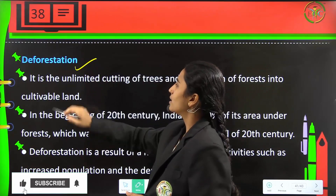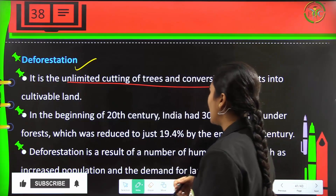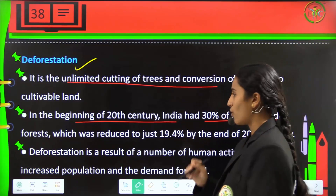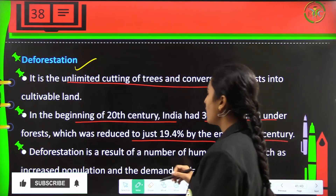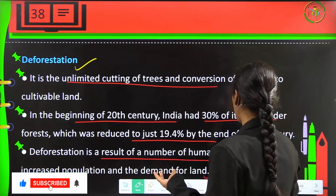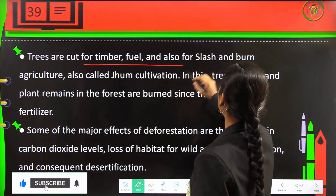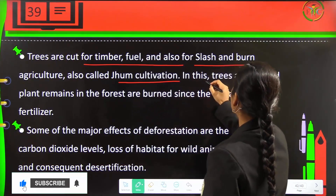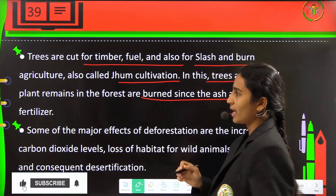Next is deforestation, which is the unlimited cutting of trees and conversion of forests into cultivatable land. At the beginning of the 20th century, India had 30 percent of its area under forest, which was reduced to just 19.4 percent by the end of the 20th century. Deforestation results from human activities like increased population and demand for land. Trees are cut for timber, fuel, and also for slash-and-burn agriculture, also called jhum cultivation, where trees are cut and the remaining plants are burnt since the ash acts as a fertilizer.